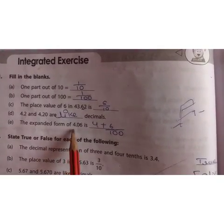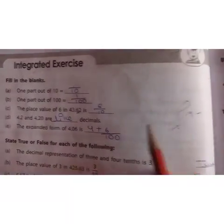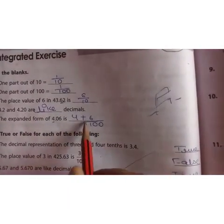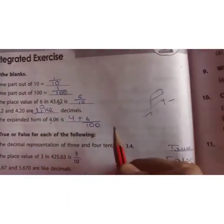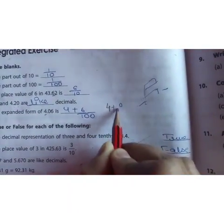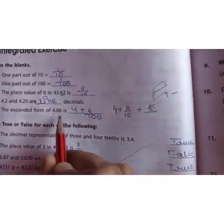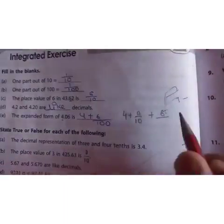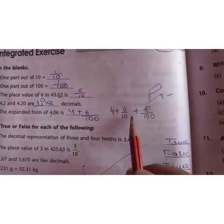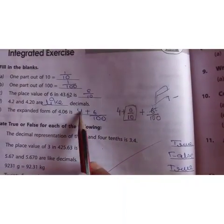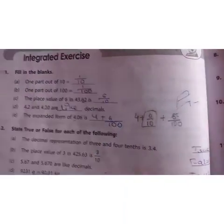Next, the expanded form of 4.06. You will write it as 4 is a whole number, so write it as it is, plus 0, that is 0 upon 10. 4 plus 0 upon 10 plus 6 upon, as it is in 100th place, you will write 6 upon 100. And this you don't have any value for this one. So you will write 4 plus 6 upon 100.